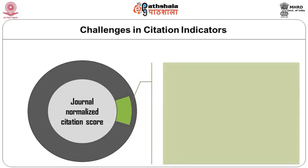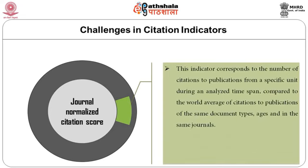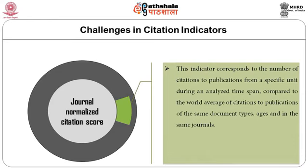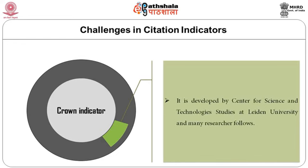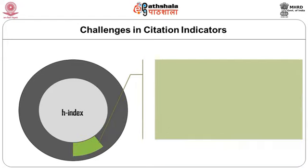The third category of indicators is journal indicators. Under this category, we can have the journal normalized citation score. This indicator corresponds to the number of citations to publications from a specific unit during an analyzed time span compared to the world average of citations to publications of the same type, age, and in the same journal. The number of citations to each of the unit's publications is normalized by dividing it by the world average of citations to publications of the same document type published in the same year in the same journal. The indicator is the mean value of all the normalized citation counts. Similarly, the Center for Science and Technology Studies has developed crown indicators. One of the popular indicators is the H-index.